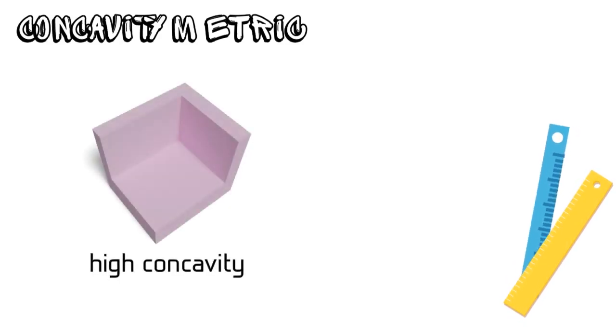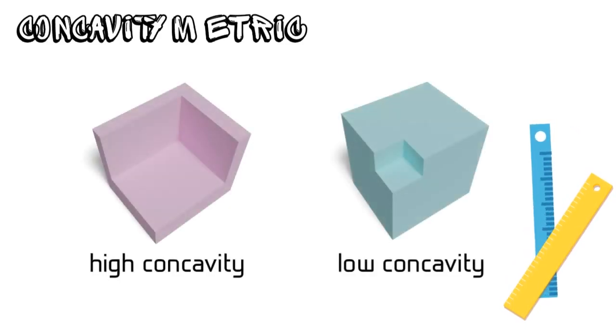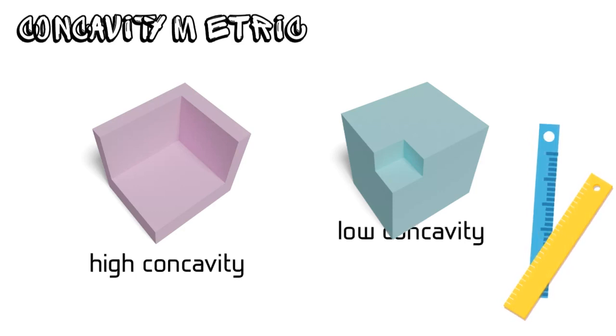Existing ACD methods share a similar overall pipeline. In order to quantify the decomposition quality, they usually first define a concavity metric to measure the similarity between a decomposed component and its convex hull. The components that are quite different from their convex hulls have high concavity, while those similar to their convex hulls have low concavity.